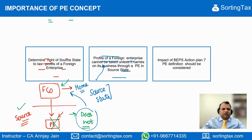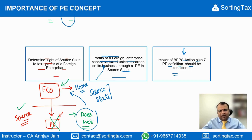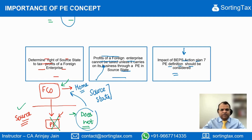When we talk about the PE concept, the impact of the Base Erosion and Profit Shifting project of the OECD — Action Plan 7, which deals with the definition of PE — should always be considered before a decision is made as to whether the foreign company has a PE or not in the source state. The PE definition may exist under the treaty between the foreign state and the source state, but there are certain changes being made to these treaties through the Multilateral Instrument. The BEPS Action Plan 7 and all those things should be considered before a decision is taken as to whether a PE is triggered or not.